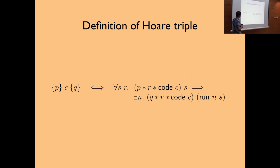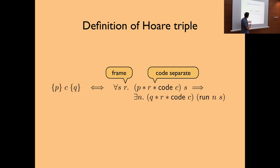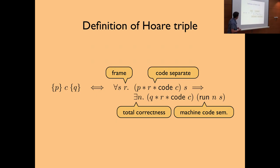Here's the definition — this is perhaps the only point in the talk where you'll see the definition being used. What it means is: if the precondition is true, some frame holds, and the code is also there separately in the state — this is separation logic — then at some point later, the execution will reach a state where the same holds except that Q is there. The code is still the same, so we know we can then execute more code. This is total correctness.